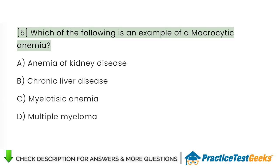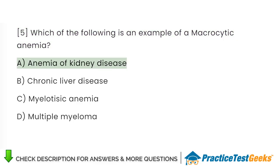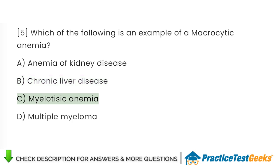Which of the following is an example of a macrocytic anemia? A. Anemia of kidney disease. B. Chronic liver disease. C. Myelophthisic anemia. D. Multiple myeloma.